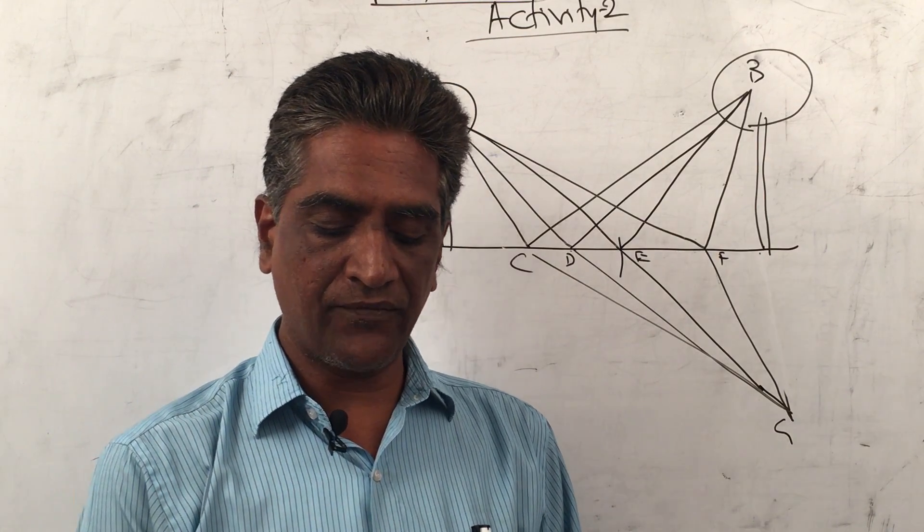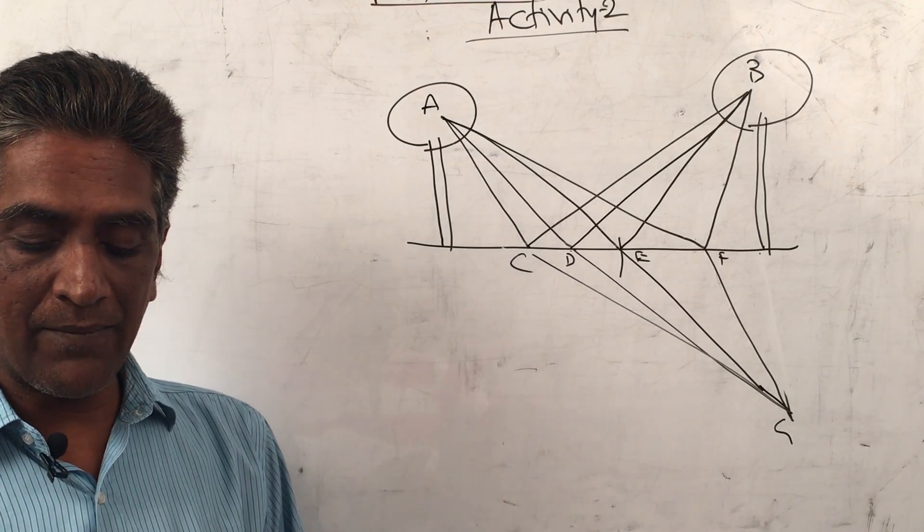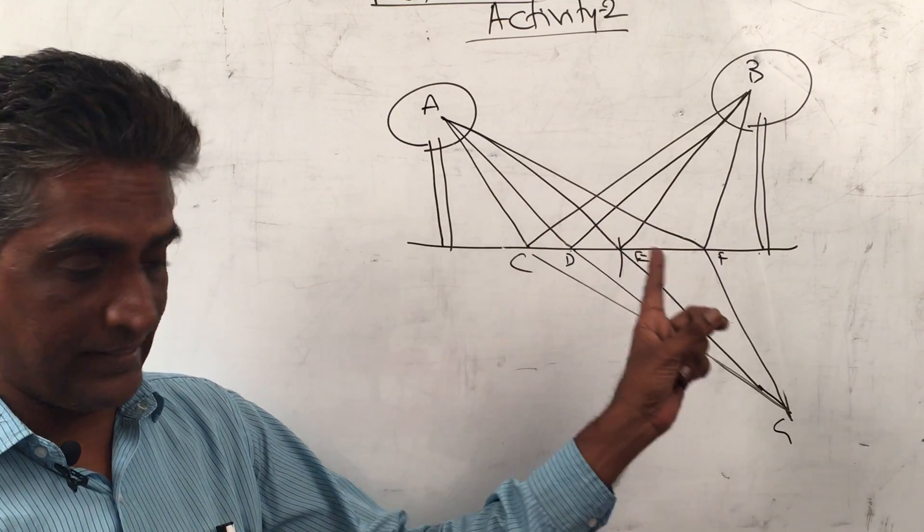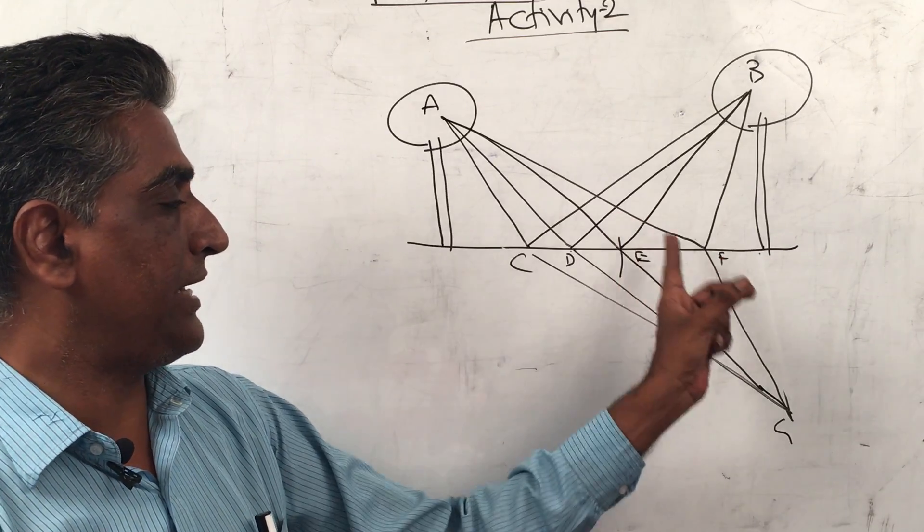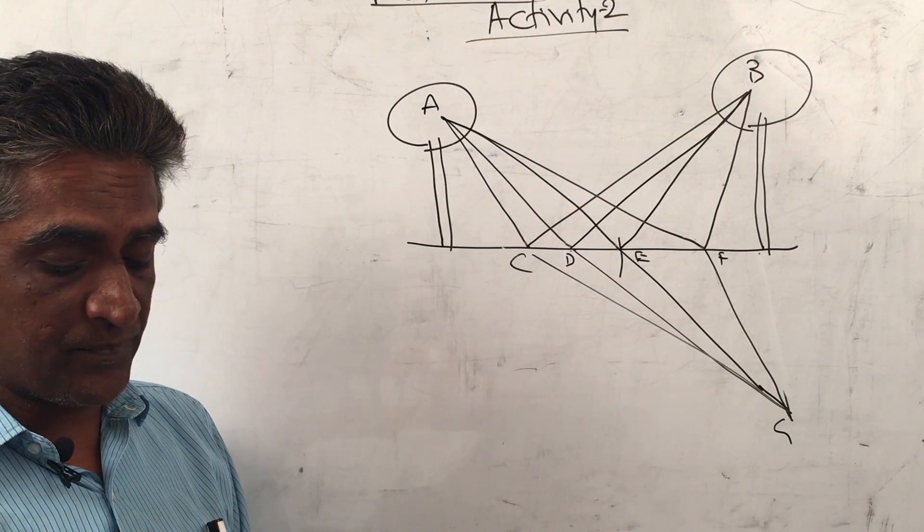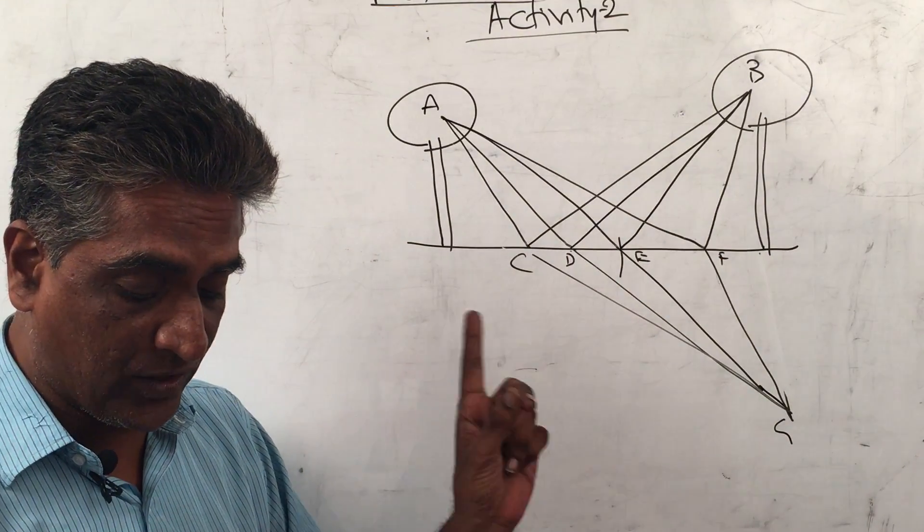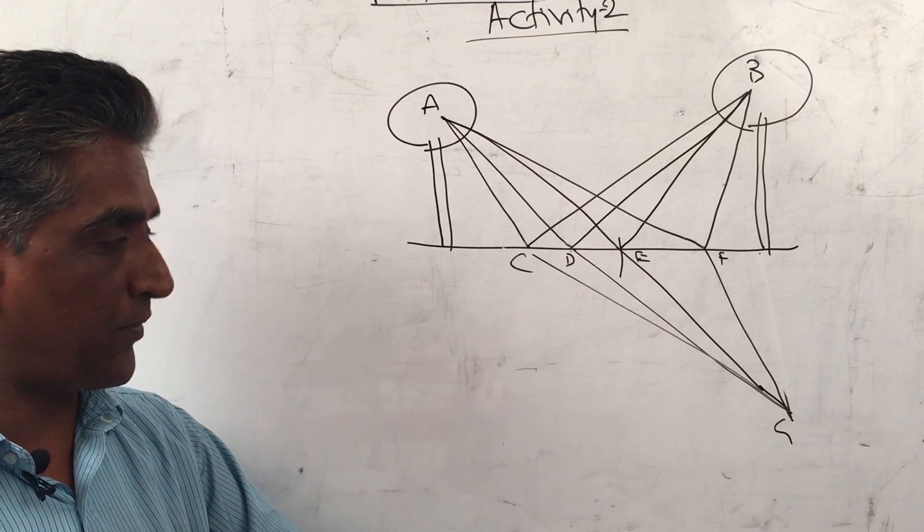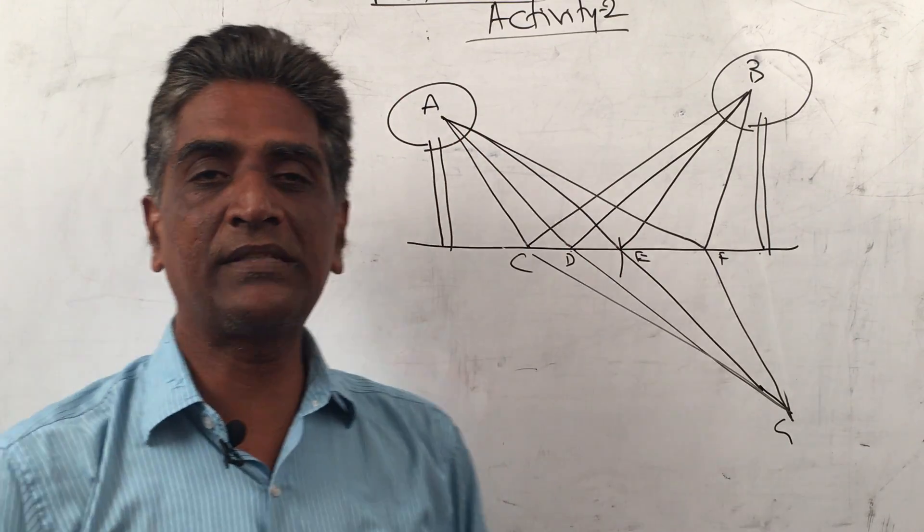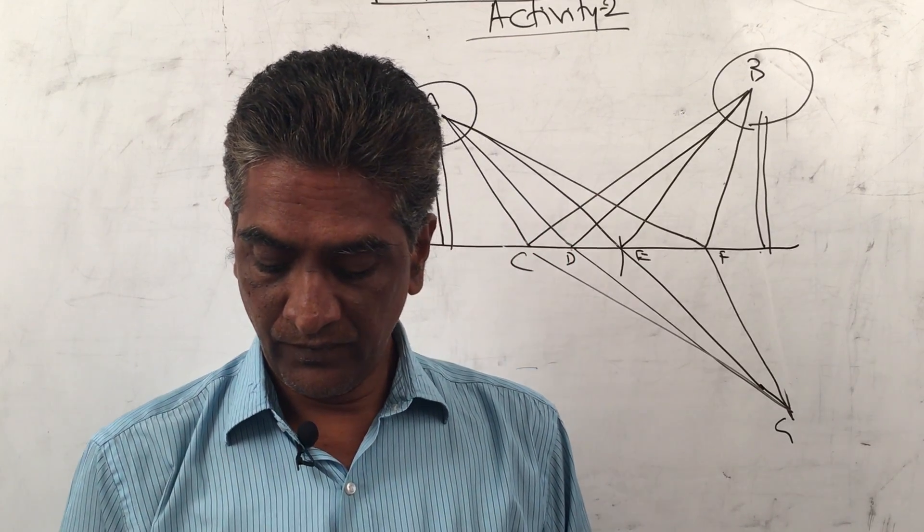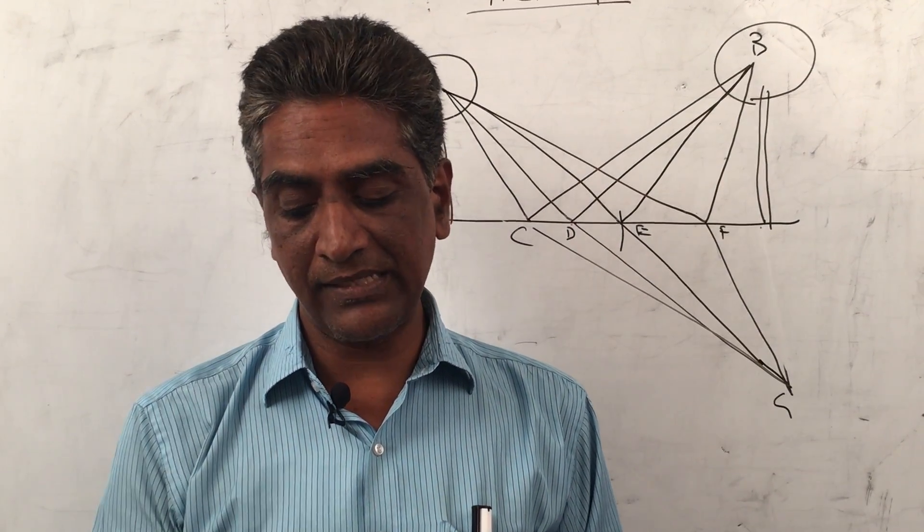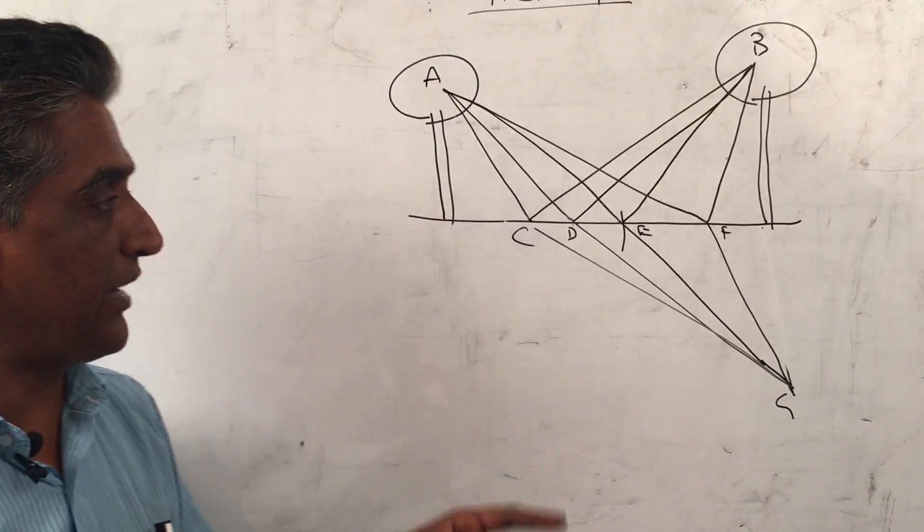If you observe the figure carefully, you will notice that among the paths ACG, ADG, AEG, and AFG, the shortest path is AEG because it is a straight line distance between points A and G. It is going straight, so obviously this will be longer than this.